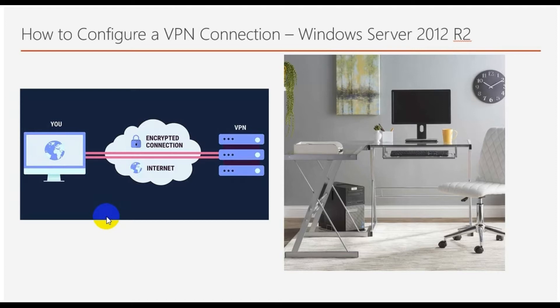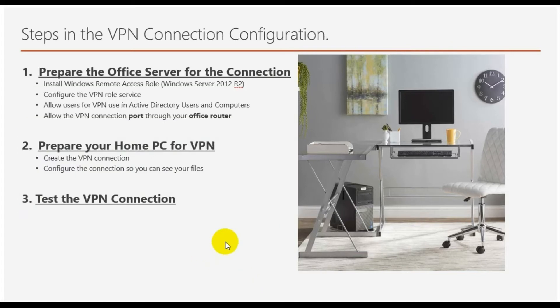The connection will be an encrypted connection once you're connected to a VPN. There are a few steps in this configuration as you can see in the illustration. The first step is to prepare the office server for the connection, in which the Windows Remote Access role will need to be installed.